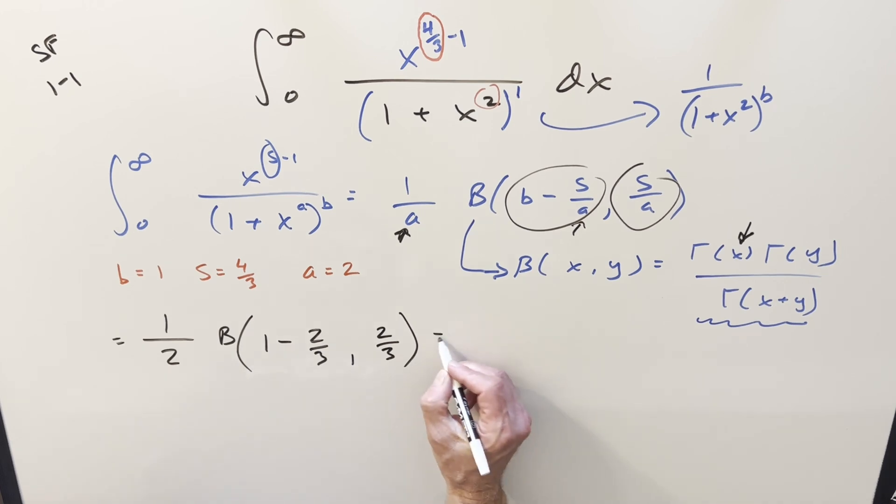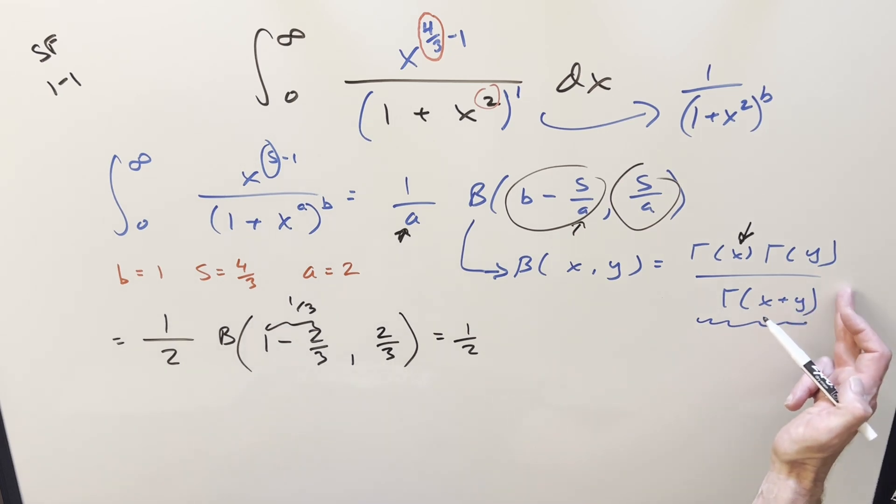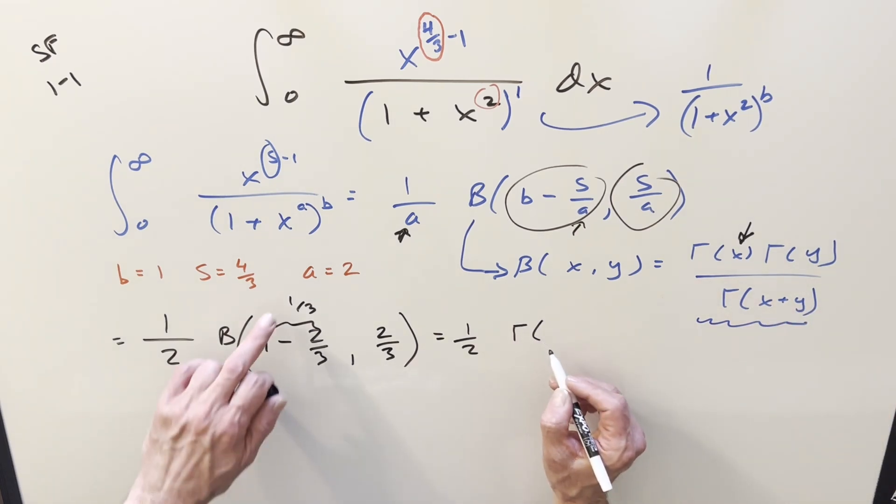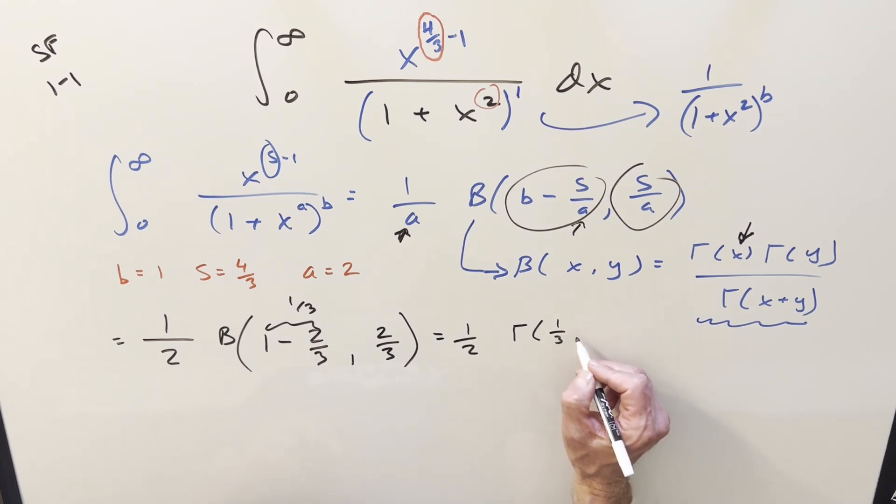And so now we can just go and calculate it. We've got our one half in front. One minus two thirds, this is going to be one third. So using now this formula, we'll put it in terms of the gamma function. So what we're going to get is gamma of one third times gamma of two thirds over gamma of the sum of these things, one third plus two thirds, that's just going to be gamma of one.